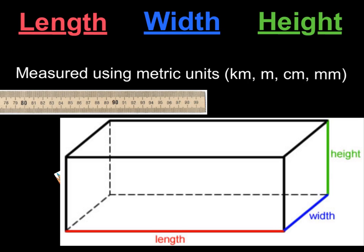Next, we're going to talk about three measurable properties of matter: length, width, and height. All three of those are measured using metric units—kilometers, meters, centimeters, millimeters.